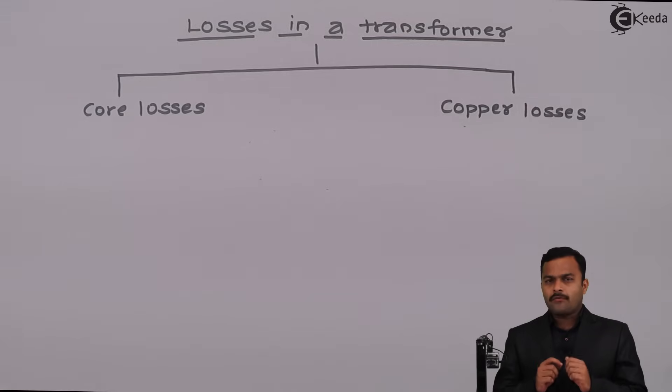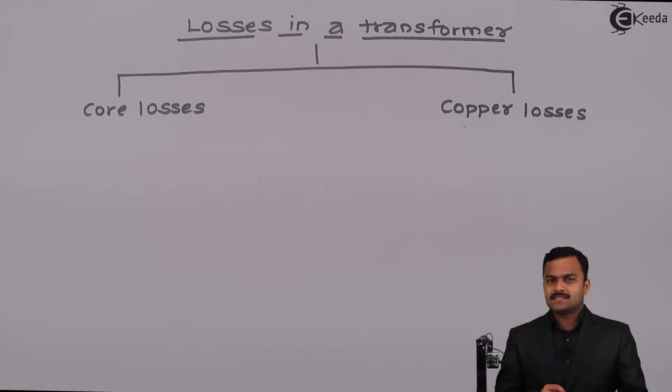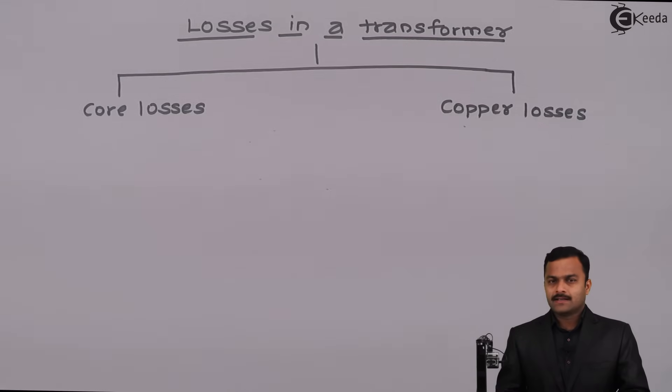The core of a transformer gets subjected to alternating flux, giving rise to core losses.